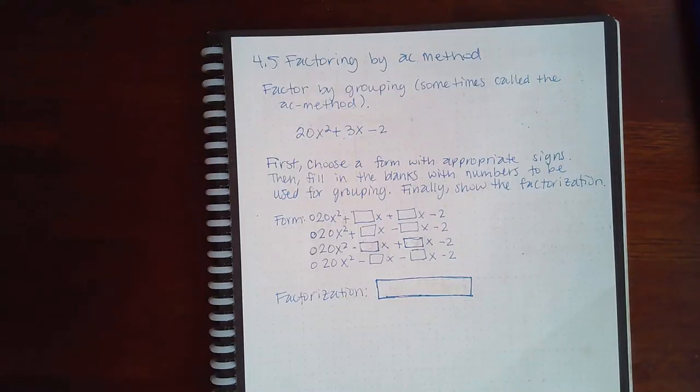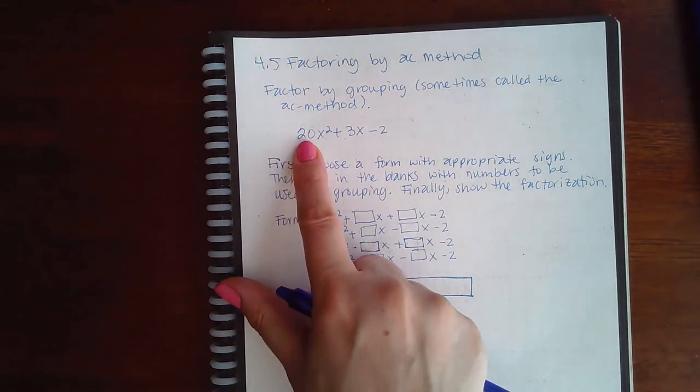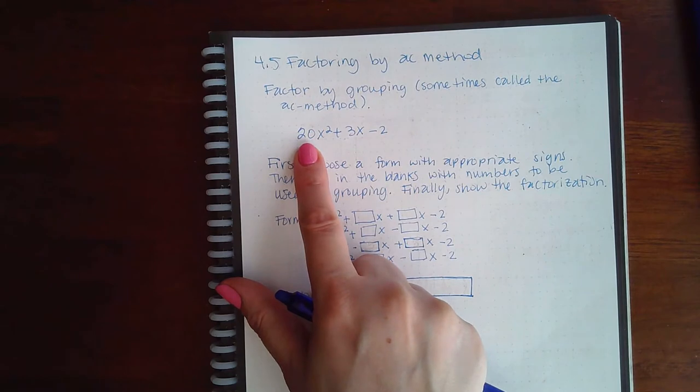Here we have 4.5 factoring by AC method. The directions say factor by grouping, sometimes called the AC method. This is the method we've been using anytime that there was a number in the front, so there's nothing different or new in this kind of problem.